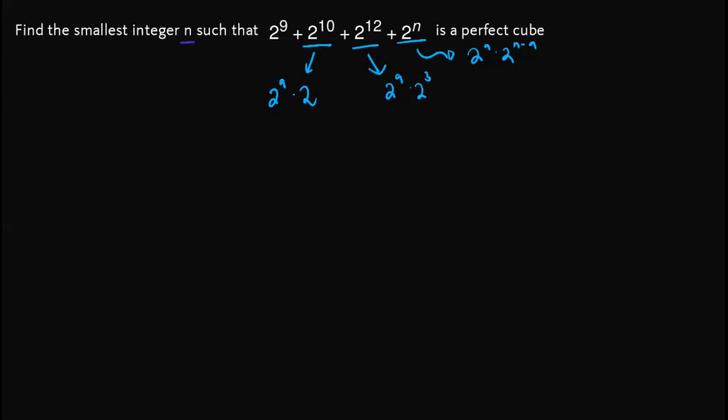So we can write the expression above as 2^9 times the quantity (1 + 2 + 2^3 + 2^(n-9)).